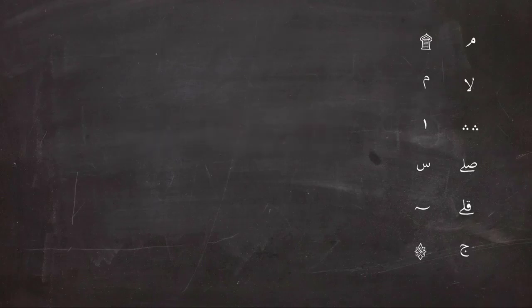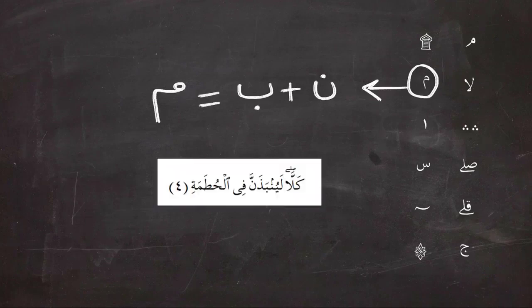Next, the sign that looks like meem looks a little bit different than the other meem, so make sure you can distinguish between them because they mean two different things. This meem appears in the middle of the word, so when noon and ba follow one another in the same word, you don't pronounce noon or ba, but you pronounce meem. Like in this example, you read it with the noon and ba assimilated together and you will pronounce them as meem.